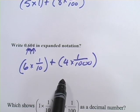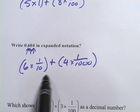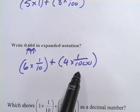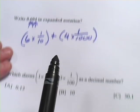That is expanded notation for 0.604, or 6 tenths and 4 one-thousandths. You could also call it 604 thousandths. Last one here.